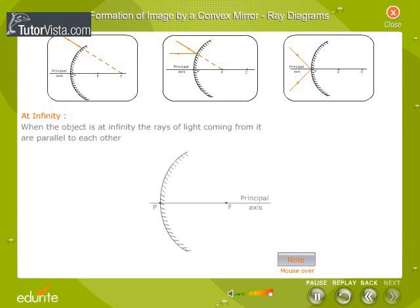Mouse over on the buttons for the ray diagrams and click on the buttons to view the animated ray diagrams for different positions. Choose the rays by clicking on the links provided.